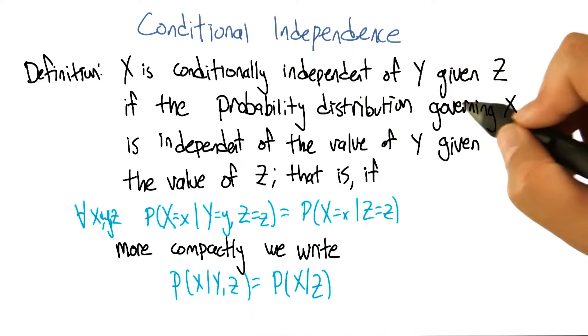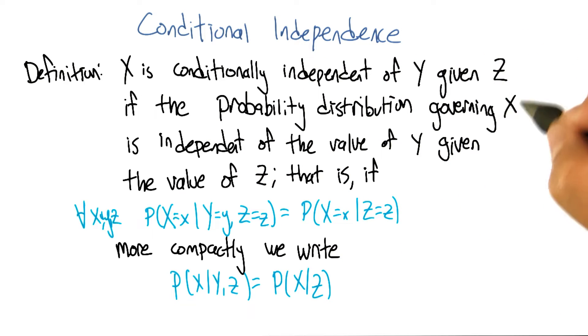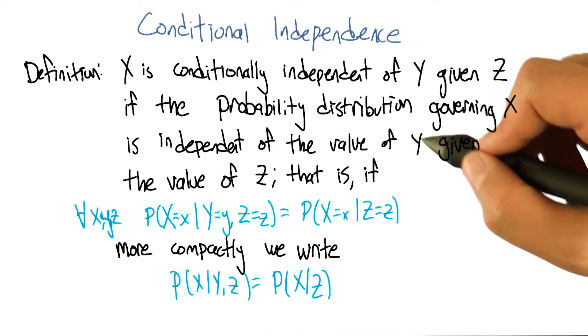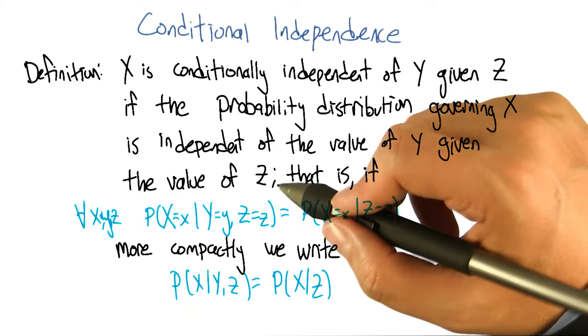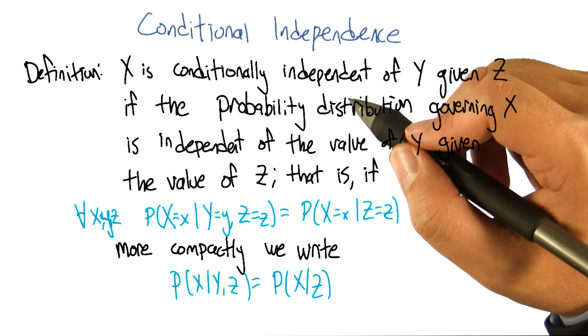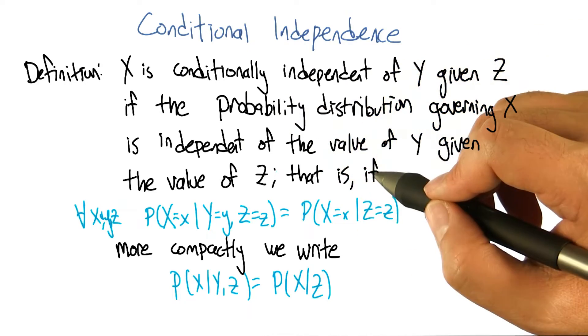If it's the case that the probability distribution governing X, so the probabilities associated with the values in this variable X, is independent of the value of Y, given the value of Z. If I tell you what Z is, then you can figure out what the probability of X is without having to look at Y.